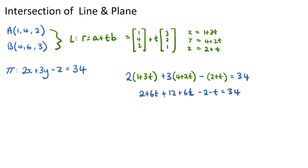If we collect our t's we'll have 6t plus 6t minus t, so 11t, and 2 plus 12 minus 2 is just 12. Therefore 11t equals 22 and t equals 2.